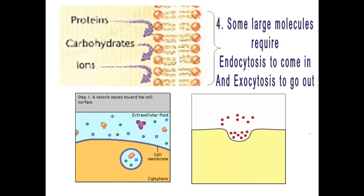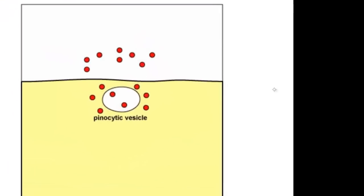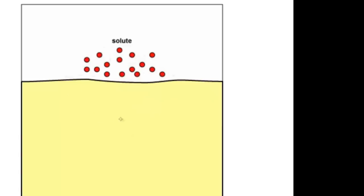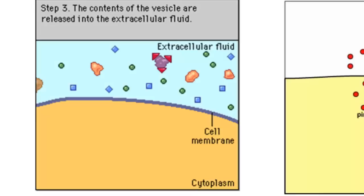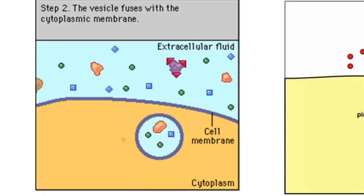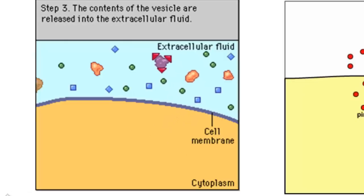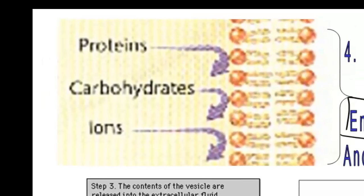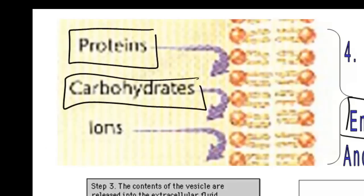The last way that things move into and out of a cell is through exocytosis and endocytosis, which takes a lot of energy. In endocytosis, solutes are brought into the cell as the cell forms a vesicle around those solutes. In exocytosis, a vesicle fuses with the membrane and dumps its contents outside the cell. Molecules must be quite large for this to happen. Examples include proteins, larger carbohydrates, and hormones.